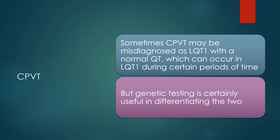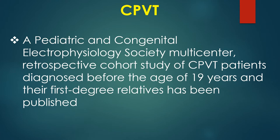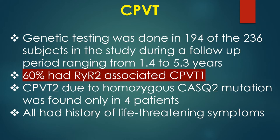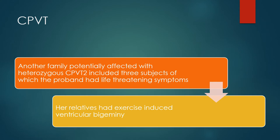Genetic testing is useful in differentiating the two. A pediatric and congenital electrophysiology society multicenter retrospective cohort study of CPVT patients diagnosed before the age of 19 years and their first-degree relatives has been published. Genetic testing was done in 194 of the 236 subjects during a follow-up period ranging from 1.4 to 5.3 years. 60% had RYR2-associated CPVT1. CPVT2 due to homozygous CASQ2 mutation was found in only 4 patients, all with history of life-threatening symptoms.